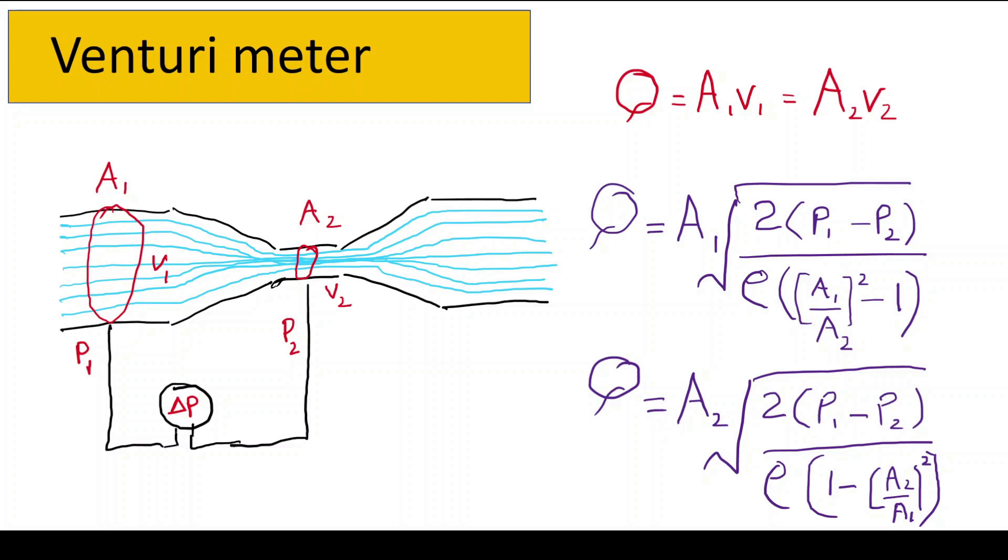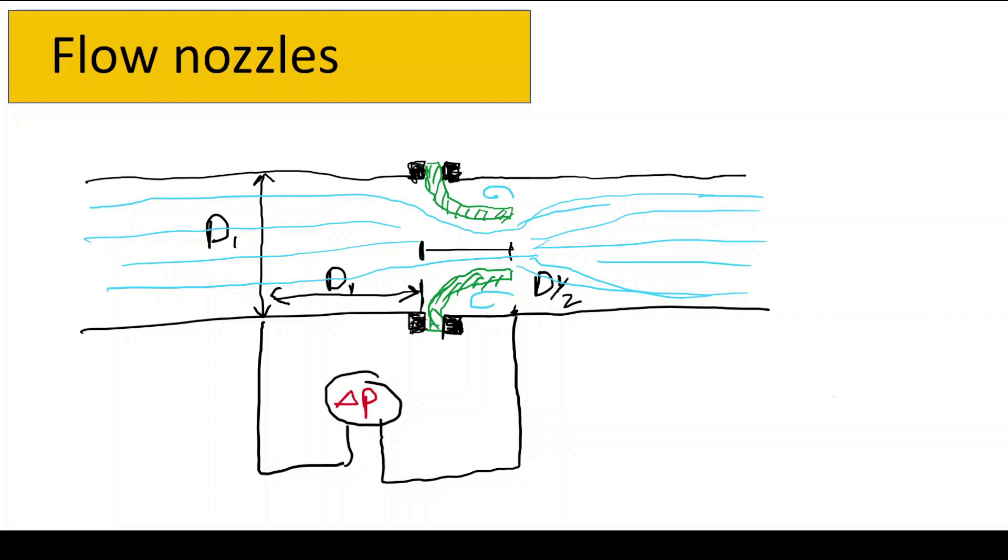This is the introduction of venturimeter. So let's move to the flow nozzles. It is similar to the venturimeter in principle but has a slightly different design. Flow nozzles are often used in applications where the fluid being measured may contain solids or where the fluid conditions are not suitable for the venturimeter. A flow nozzle consists of a specifically designed nozzle with a sharp-edged inlet and diverging outlet section. The flow nozzle is inserted into the pipeline and the fluid flows through it.